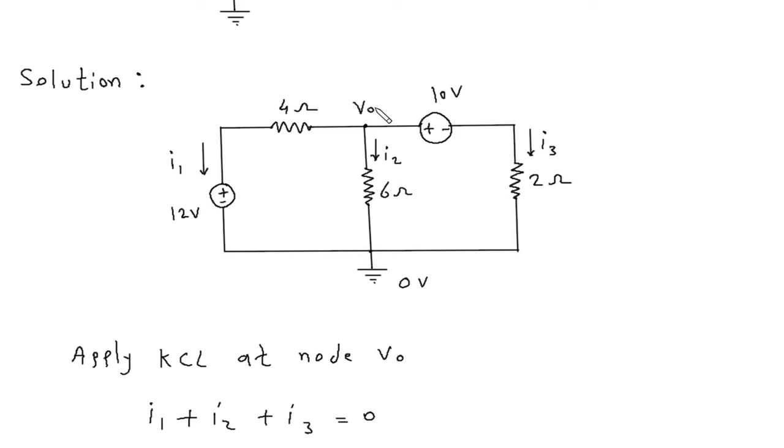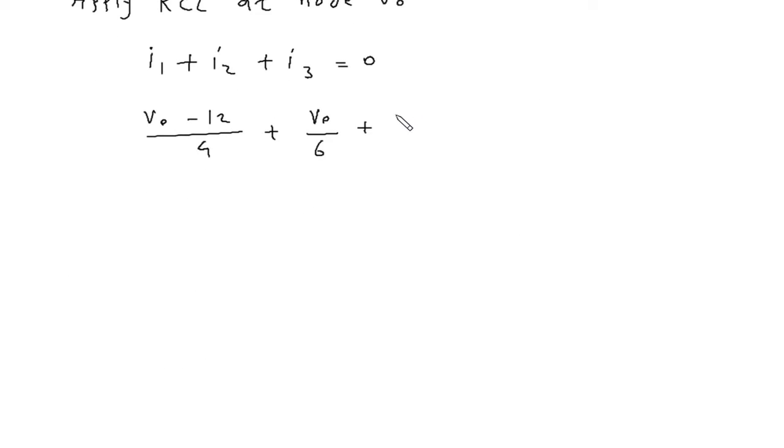This I3 is equal to Vo minus 10 over 2 equals 0. So this will be Vo over 4 minus 12 over 4 plus Vo over 6 plus Vo over 2 minus 10 over 2.